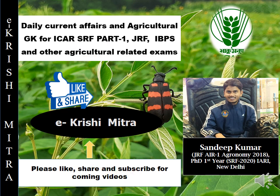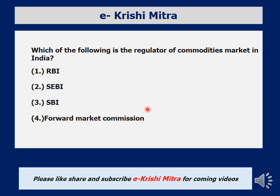First question: which of the following is the regulator of commodity marketing in India? Options are RBI, SEBI, SBI, and Forward Market Commission. RBI is the main capital regulator, not commodity regulator in India. So the right answer is Forward Market Commission.